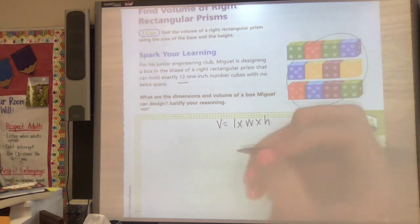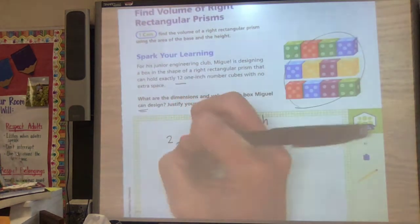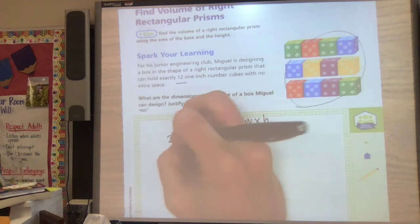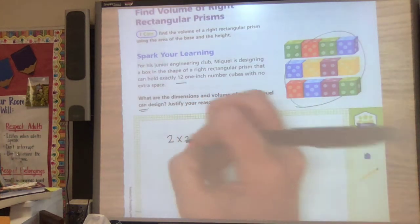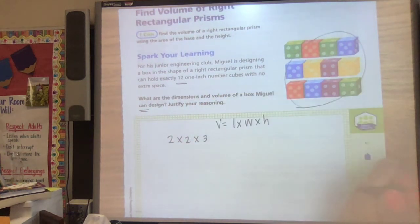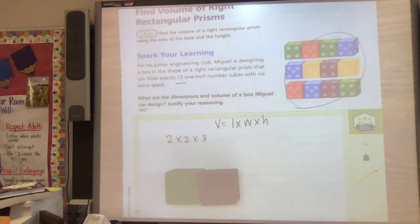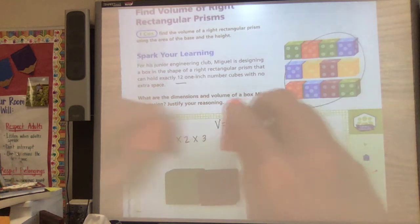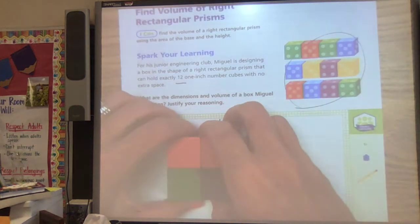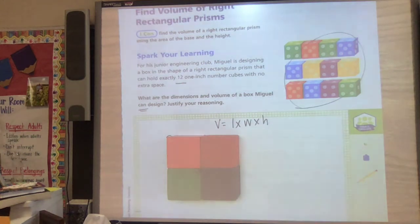All right, so there are so many things you could do. So if I say 2 times 2, that's 4, and I know 4 times 3 would give me 12. And remember, length is how long it is, width is how wide, so it'd be two long, two wide, and then three height. So we're gonna have to put three blocks high.